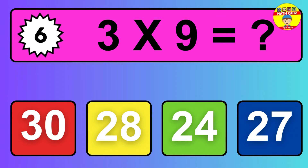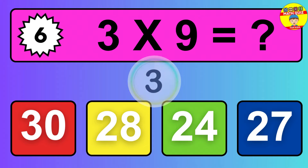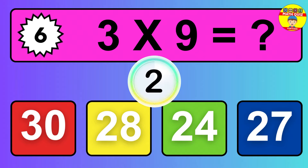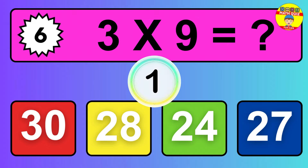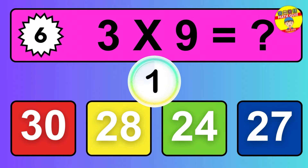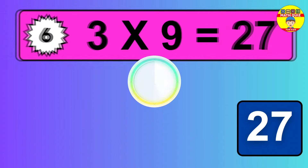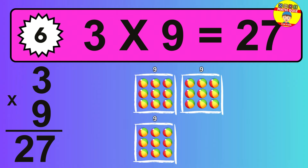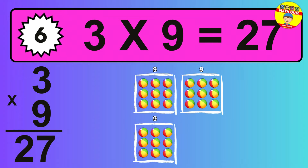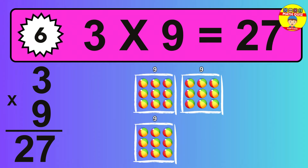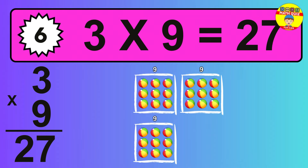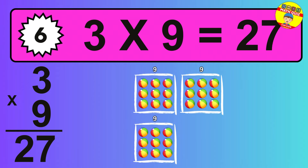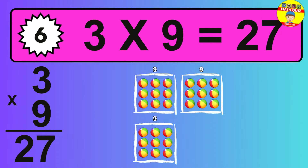Question 6. 3 times 9 equals what? The answer is 3 times 9 is 27. To calculate, we have 3 groups with 9 balls each one. So, how many balls do we have? 27 balls.